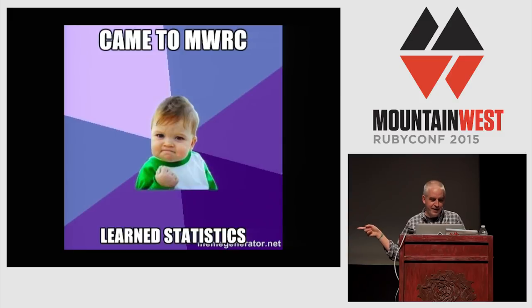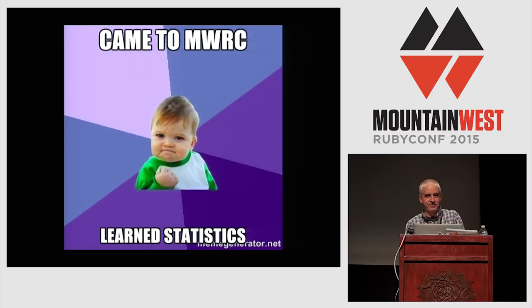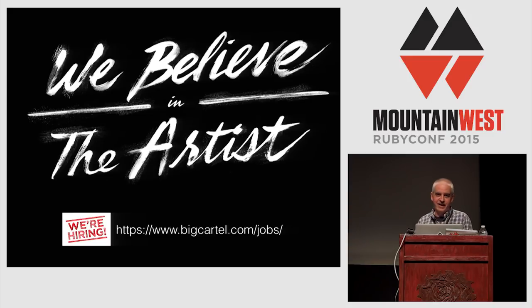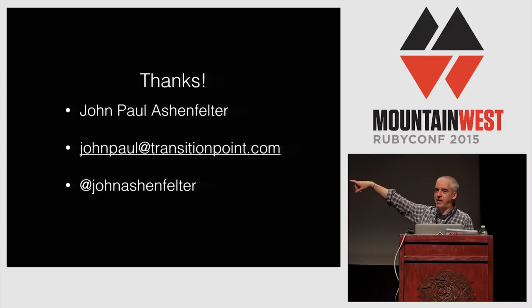You came to Mountain West Ruby Conference and you learned some statistics. We talked about basic descriptive stats — always report a standard deviation. You know you can compare two sets of means using Student's t-test, which is the Guinness thing, so remember: standard deviation and Guinness. We covered A-B testing, which means you should really look at what Bayes can teach you. And then you can answer ridiculous interview questions with Fermi estimation. I don't tell lies, but when I do, I use statistics — because that makes it look like you're a better liar.